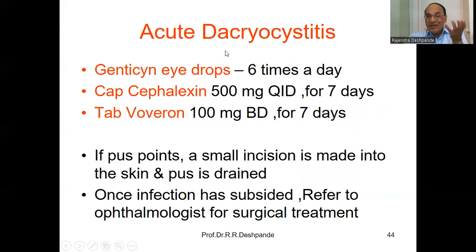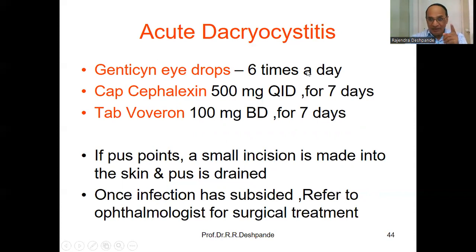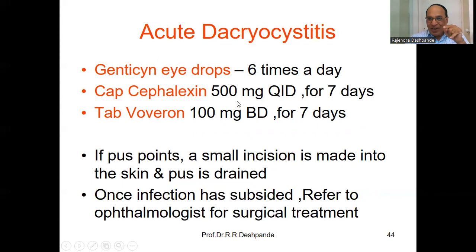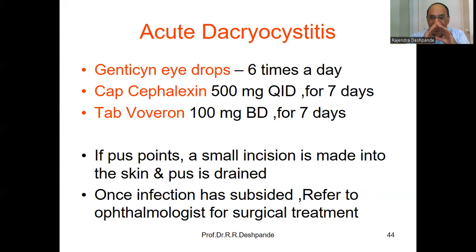This is a bacterial infection, so antibiotic treatment is needed. Gentamicin eye drops — six drops per day, six times. Then internal antibiotic: capsule cefalexin 500 mg, four times a day at 8 AM, 12, 4, and 8 PM, for seven days. Do not stop the antibiotic at random — that is very dangerous.